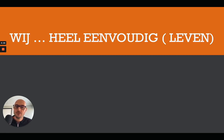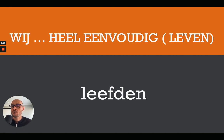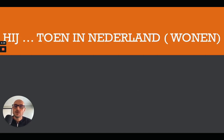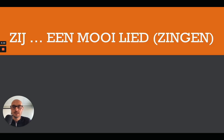Next: wij [blank] heel eenvoudig, and the verb is leven — to live. The answer is wij leefden heel eenvoudig. The v in the base turns into an f. Normally following 't kofschip rules, f is part of that group and we'd add -ten, but this is an exception — we look at the infinitive with the v and therefore write -den. Then: hij [blank] toen in Nederland, and the verb is wonen. The answer is hij woonde toen in Nederland — completely regular, n is not part of 't kofschip so we add -de.